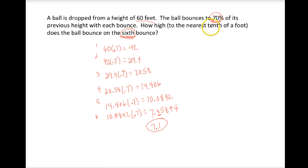You could also write out your formula. We know we're starting with 60 feet, and each time it bounces, we're multiplying by .7.